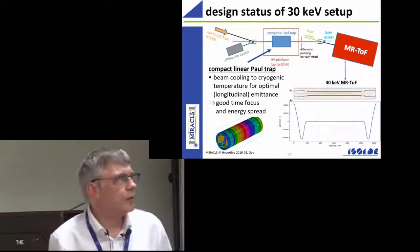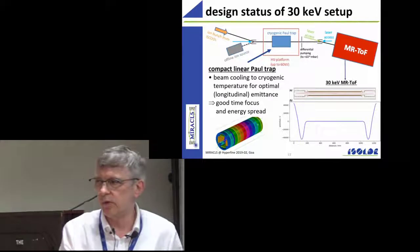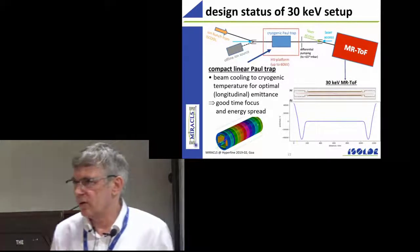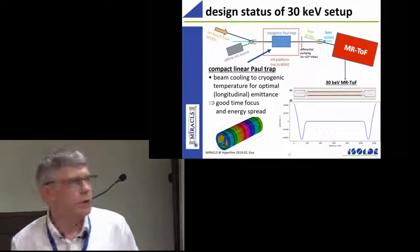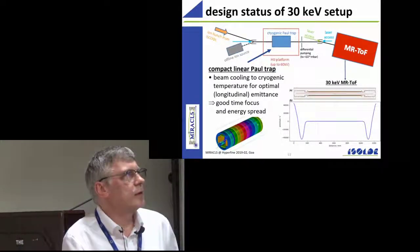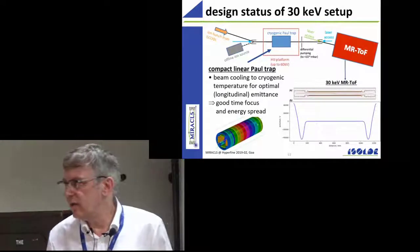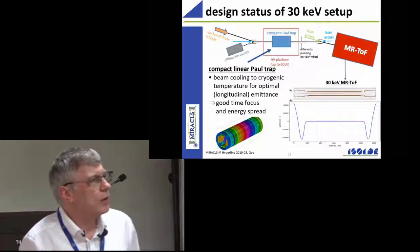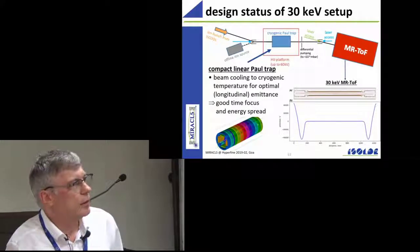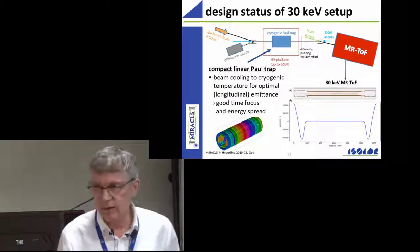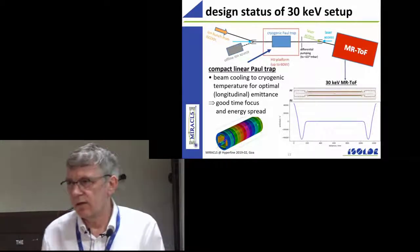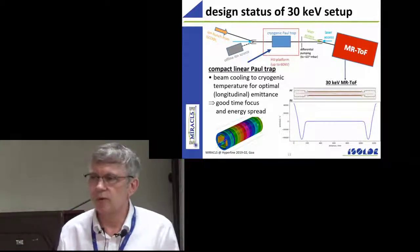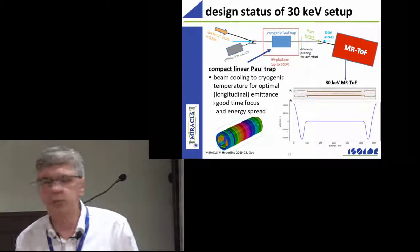In the future, this proof of principle experiment was on the order of one to two kilo electron volt operation. In the future we are about to design a 20 kV system. And in addition, this will come with a linear pole trap which will be cryogenic so that the initial energy distribution of the ions will be reduced to as small as possible.